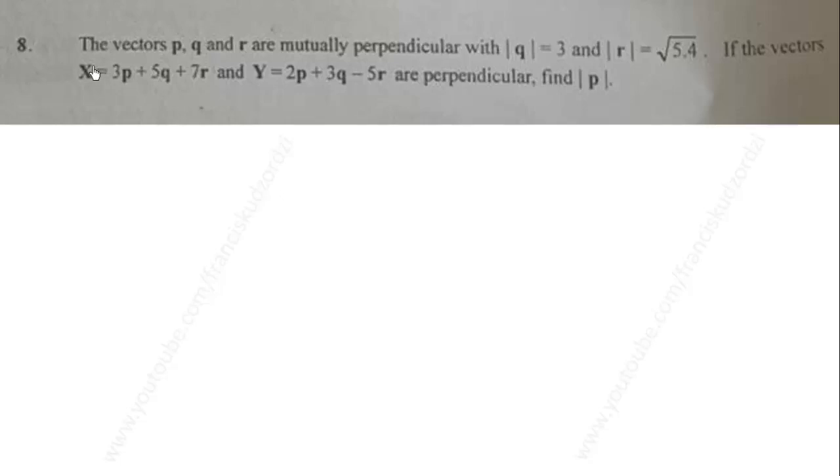WASSCE 2020 Elective Mathematics Paper 2, Question 8. The vectors P, Q, and R are mutually perpendicular with magnitude of Q equal 3 and magnitude of R equal square root of 5.4. If the vectors X equal 3P plus 5Q plus 7R and Y equal 2P plus 3Q minus 5R are perpendicular, find magnitude of P.